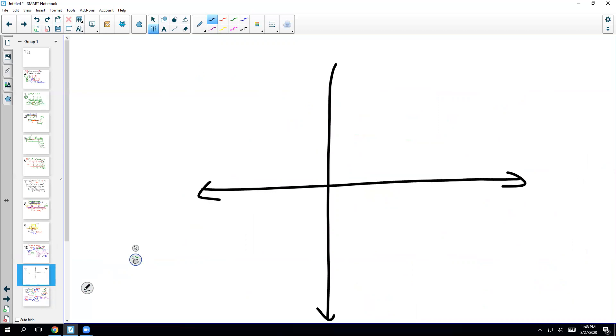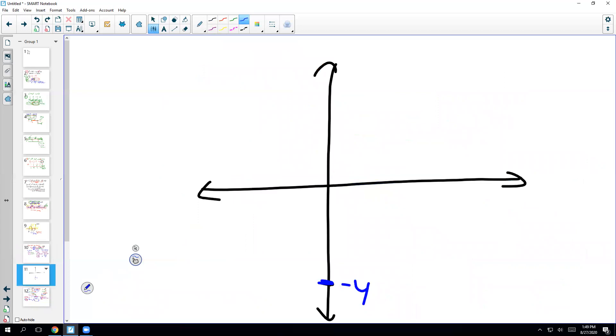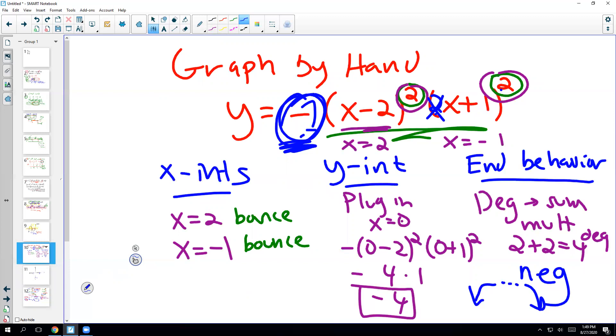I might have to flip back and forth a little bit, but let me put some axes here. So what was that information again? Well, I remember there was a y-intercept at negative 4. Negative 1 and 2 are both bounces on the x. Those are both going to be bounces. I'm going to just put a b next to them, just to remind myself.